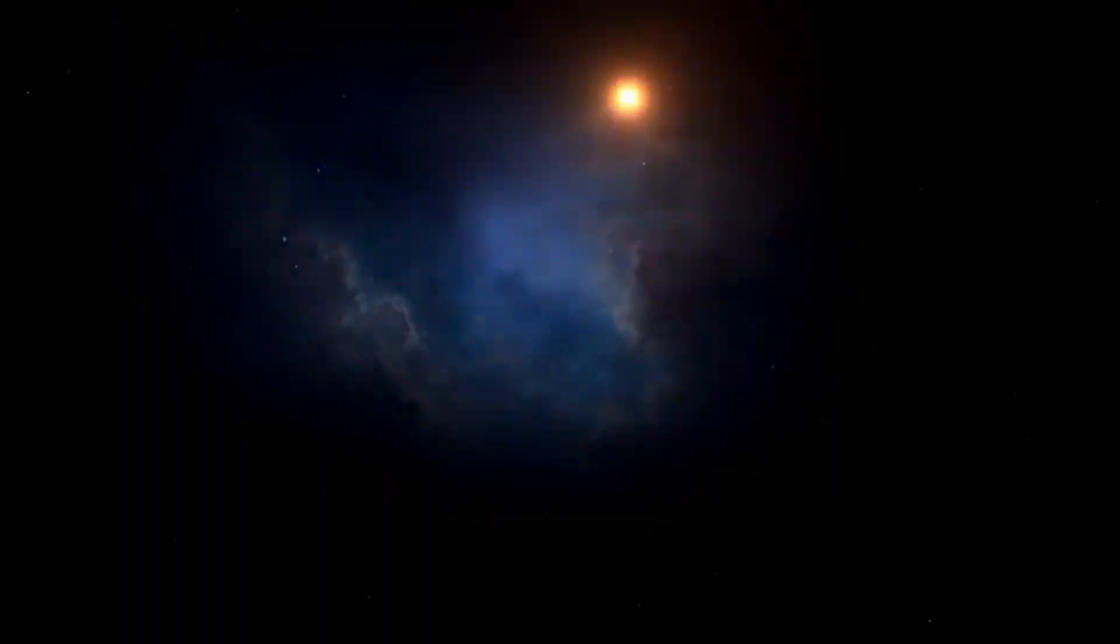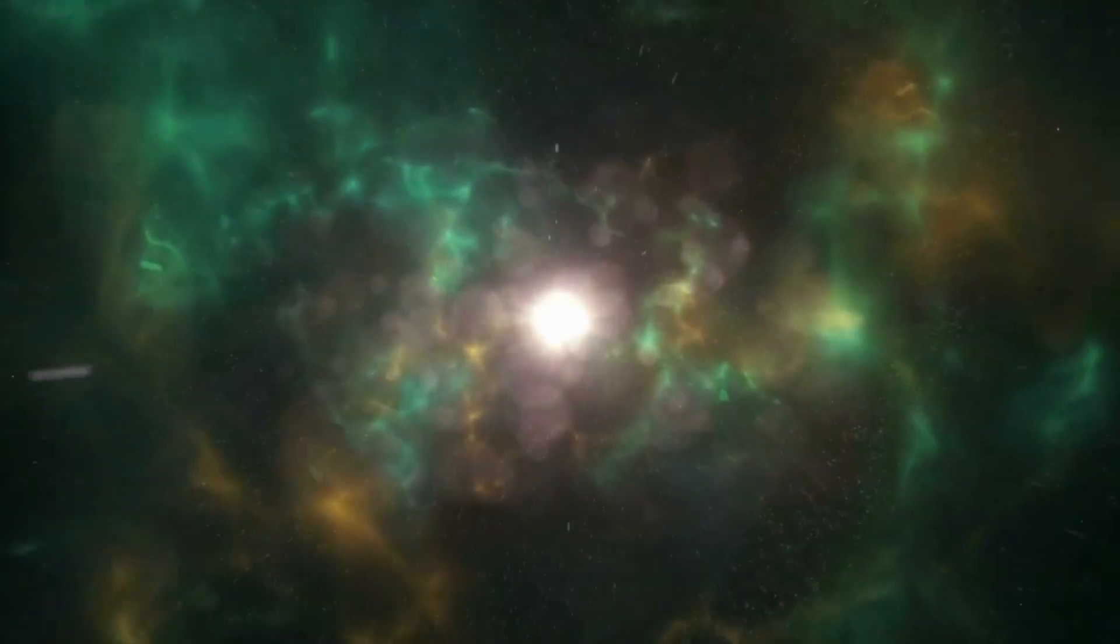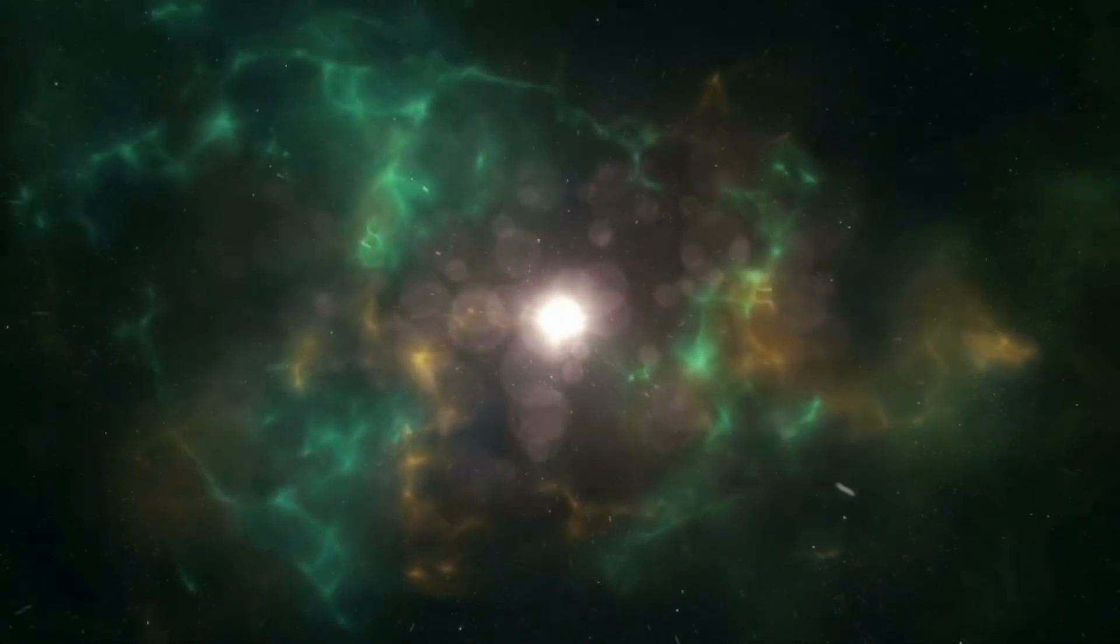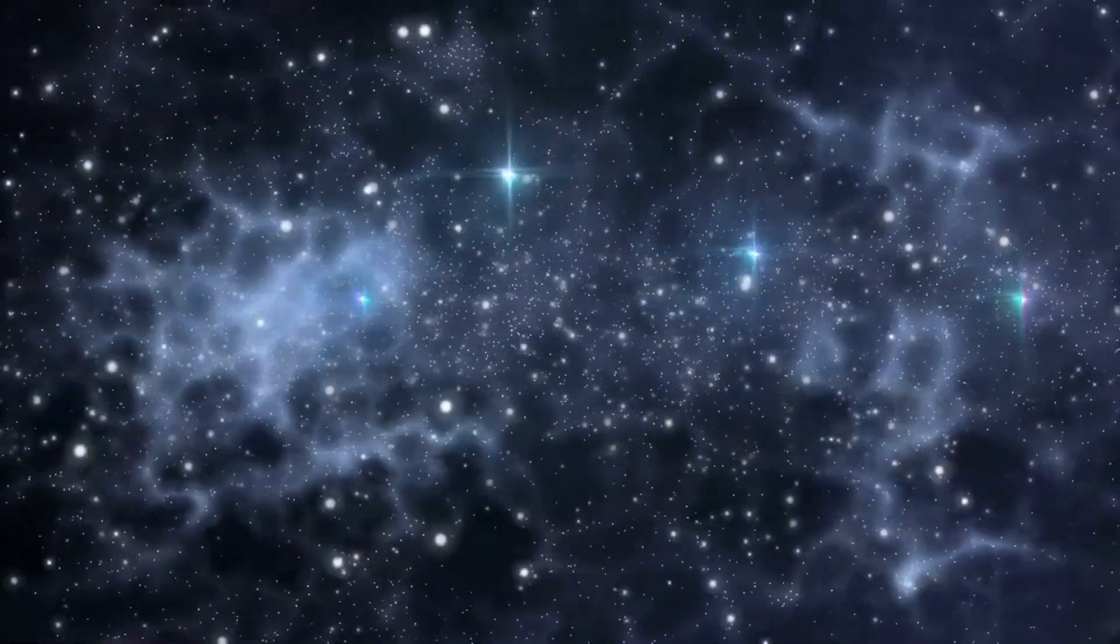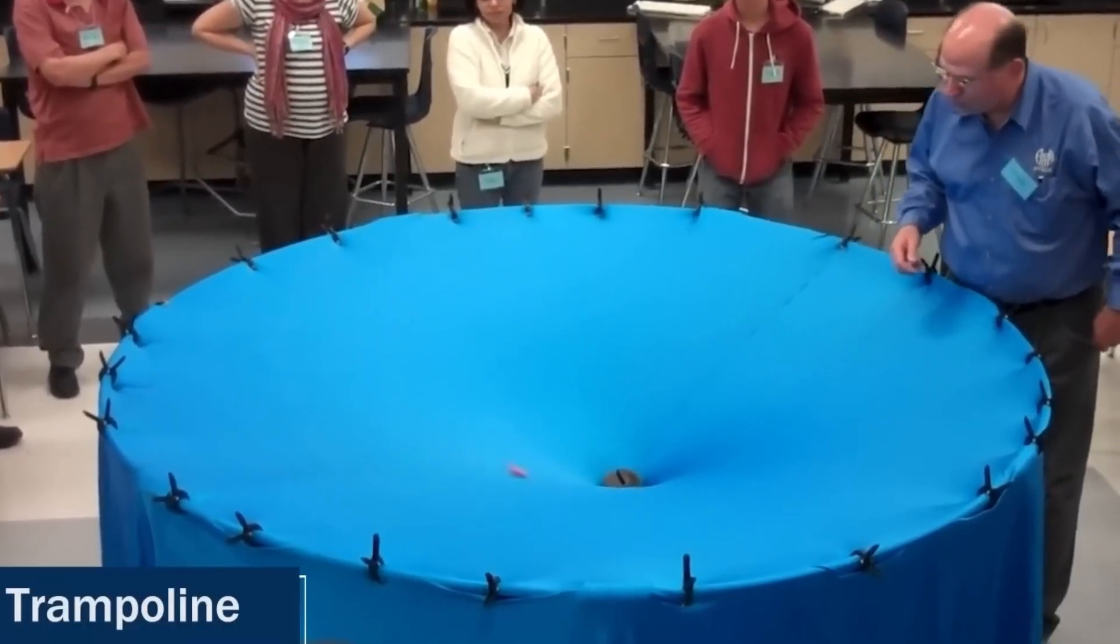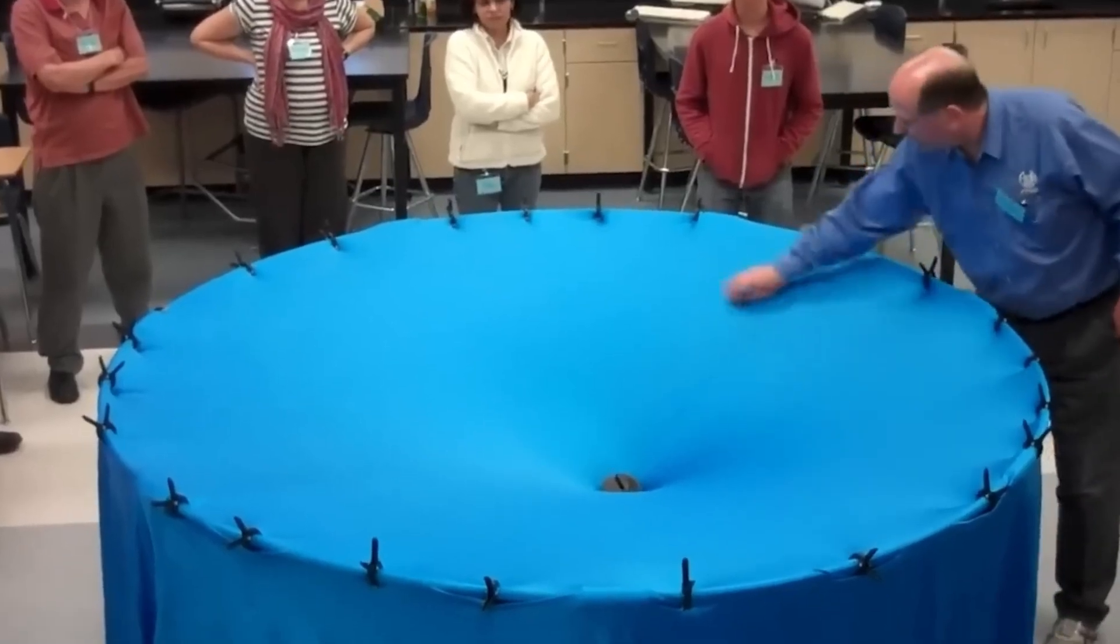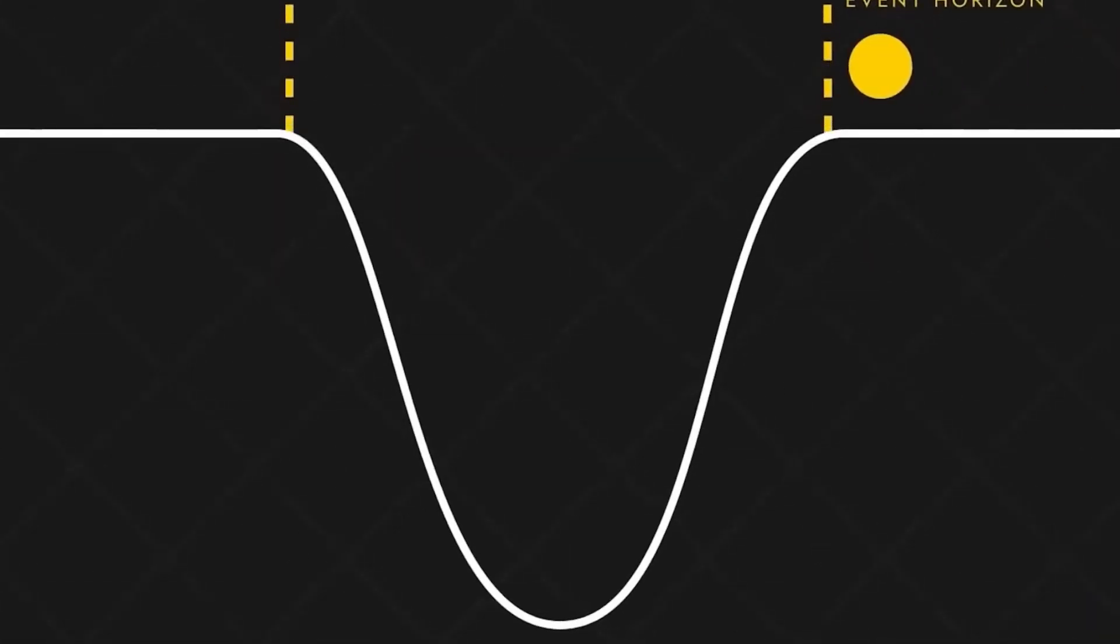The phenomenon of gravitational lensing occurs when the light from a distant object, such as a galaxy or star, is bent and magnified by the gravitational field of a massive object, like a galaxy cluster or black hole, that lies between the observer and the distant source. The gravitational pull of the intervening mass warps the fabric of spacetime, creating a lensing effect that can focus and amplify the light from the background object.